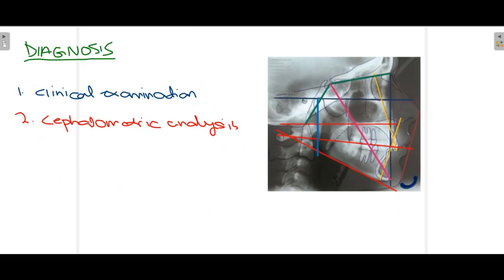For diagnosis, two tools are used. First, clinical examination: when the patient bites in habitual or centric occlusion, we assess whether the overlap between maxillary and mandibular incisors is normal. Second, lateral cephalometric analysis: when the planes (Frankfurt horizontal, mandibular, and SN) are almost parallel to each other, and the mandible is rotated upward, and the anterior cranial base angle is acute, these factors together suggest the patient may have deep bite.